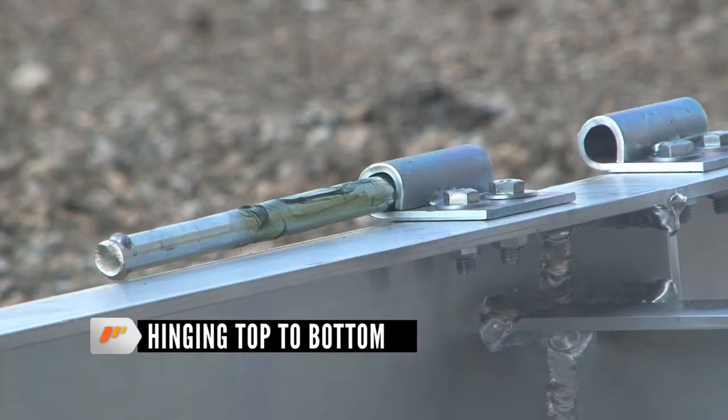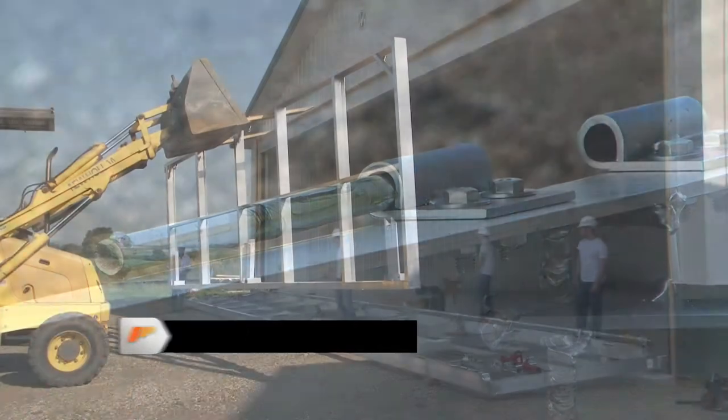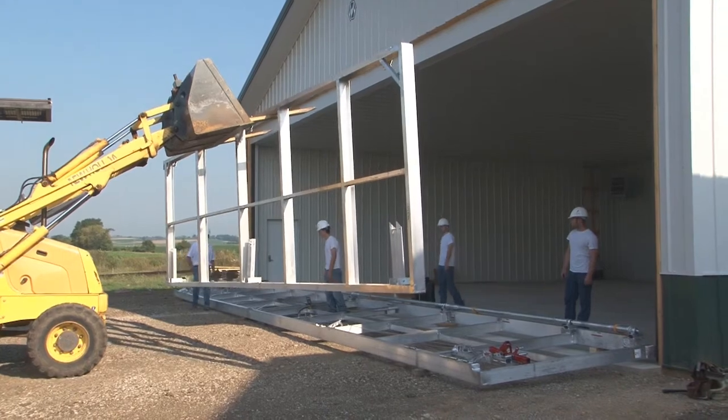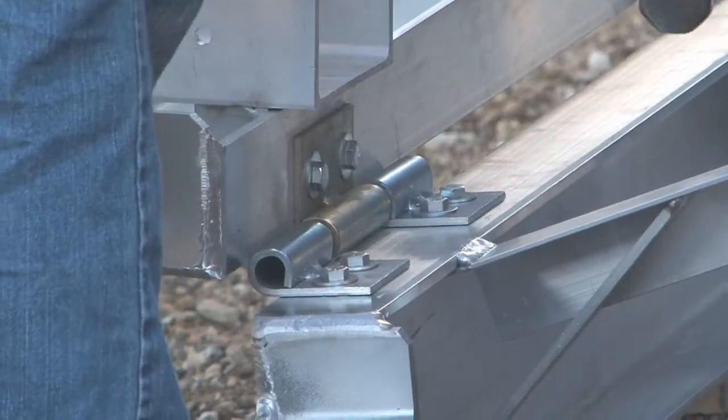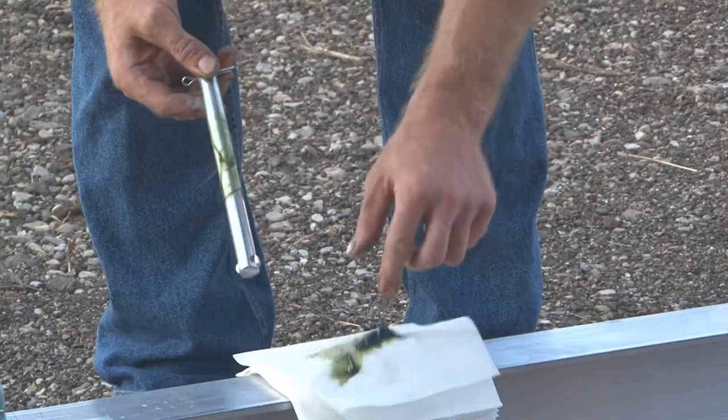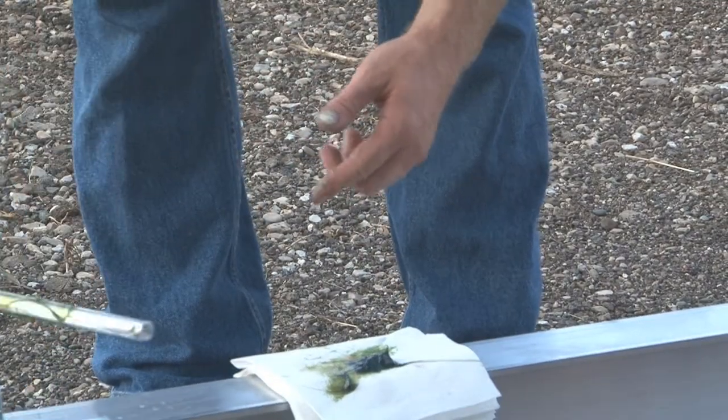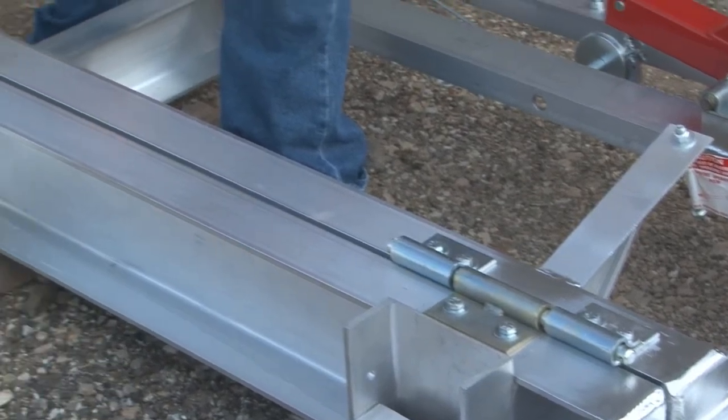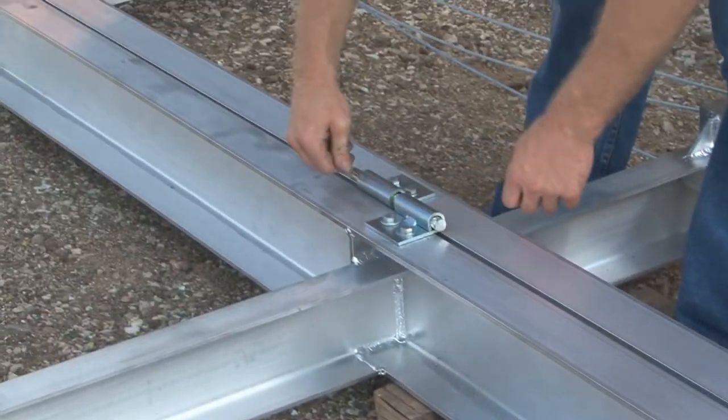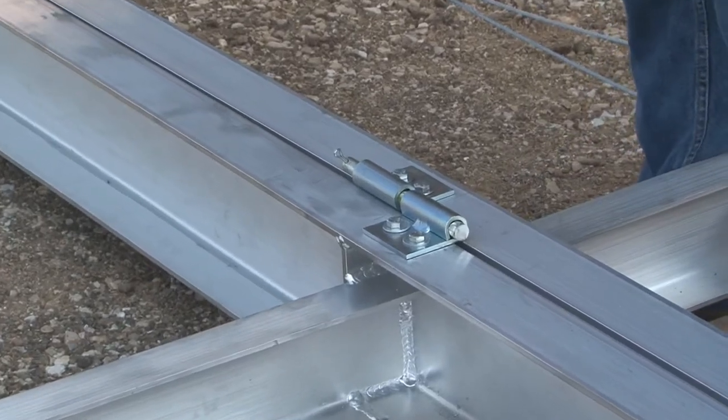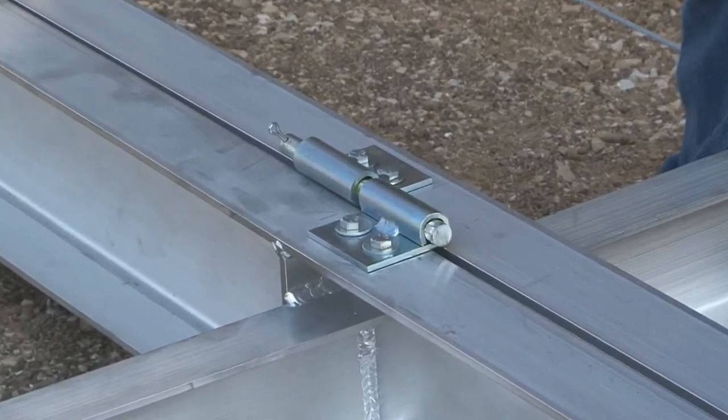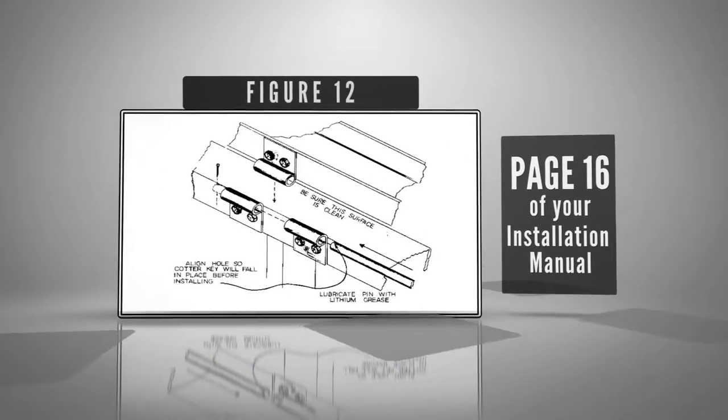Hinging top to bottom. Remove hinge pins at centerfold of door. Slide top section up to bottom section so hinges line up and reinstall hinge pins. Note: it's recommended that the hinge be lubricated with lithium grease. To simplify installation of cotter key and hinge pin, be sure hole in pin is parallel with door. Be careful no foreign material gets between sections or difficulty may occur in aligning hinges. See Figure 12.